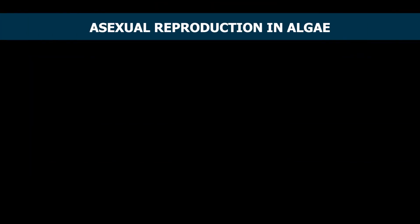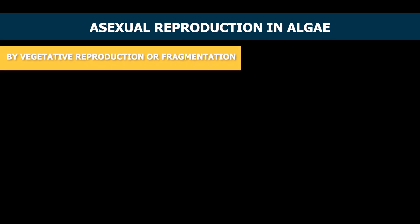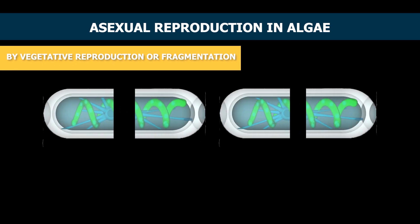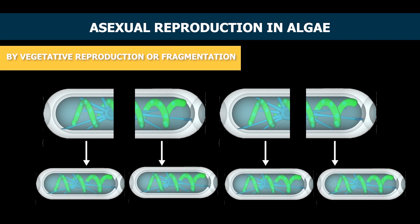There are different ways asexual reproduction takes place in algae. 1. By vegetative reproduction or fragmentation. In this reproduction, algae breaks down into small fragments and these fragments grow into bigger organisms. Spirogyra reproduces in such fashion.